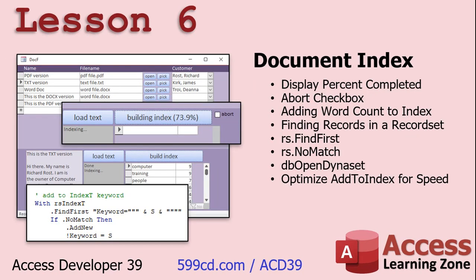Finally, in lesson six, we're going to finish up this document index. We're going to display the percent completed — so you'll see something like '73% completed' while the index is building, which is great for longer documents that take a while to compile. At the end of the lesson we're going to optimize this by replacing some of the SQL we've been writing with record sets. We'll use FindFirst and NoMatch — there's new record set stuff, folks.